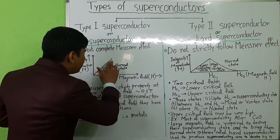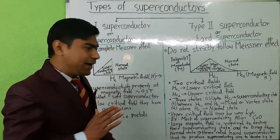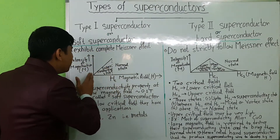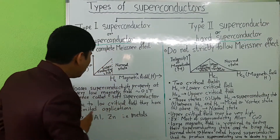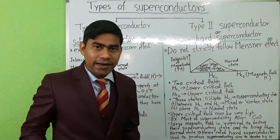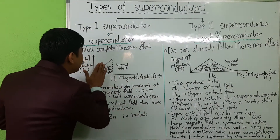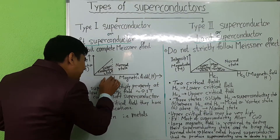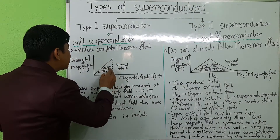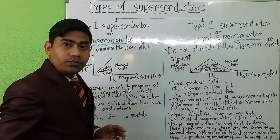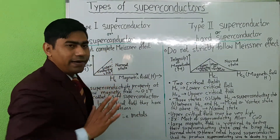At a particular value of magnetic field, magnetization becomes abruptly zero. So for type 1 superconductors, with increasing magnetic field, magnetization increases, and after a particular value of magnetic field, magnetization becomes abruptly zero. This is the magnetization graph for type 1 superconductors.